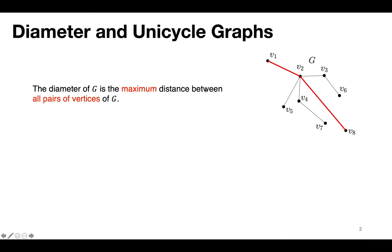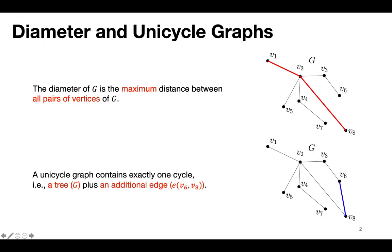The diameter of a graph is defined as the maximum distance between all pairs of vertices of this graph. A unicycle graph contains exactly one cycle. For example, a tree plus an additional edge E(v6, v8) would become a unicycle graph.